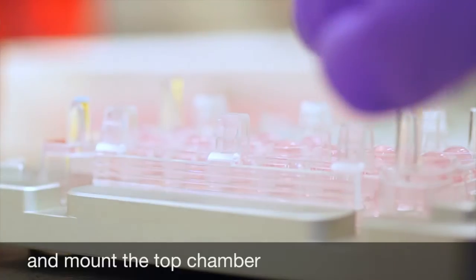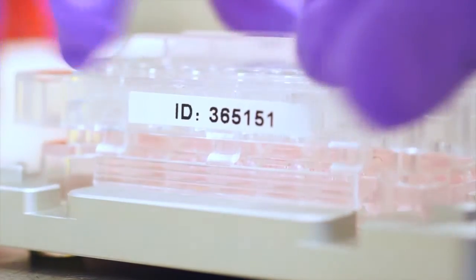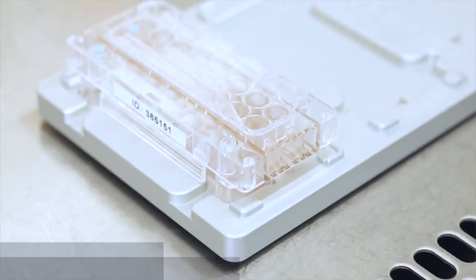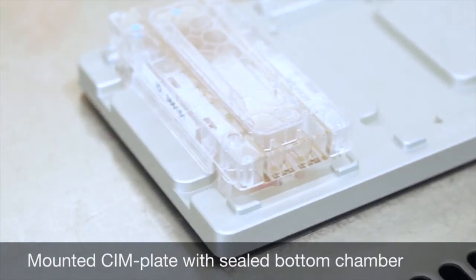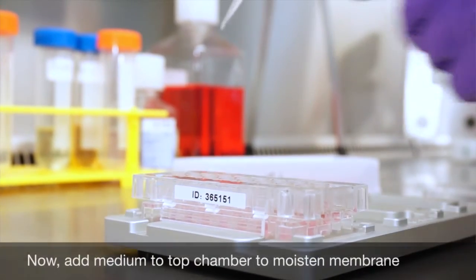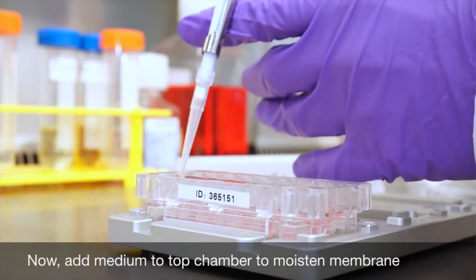Click the top chamber onto the bottom chamber. Add medium without chemoattractant to the wells of the top chamber to moisten the membrane.